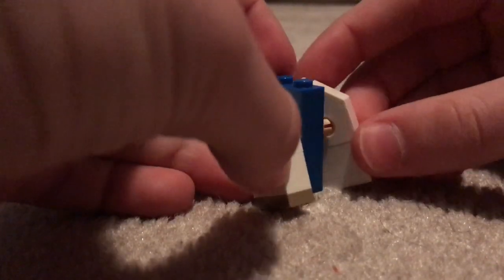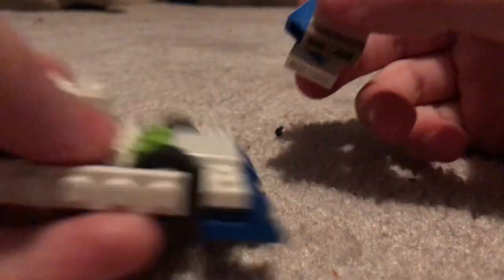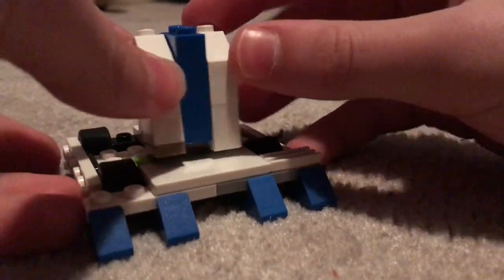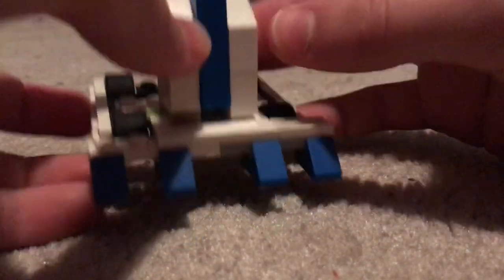Then you attach the bar to it and now you have the weapon mount. Take your piece you built, then on those green dots you're going to attach it, and now you have this.